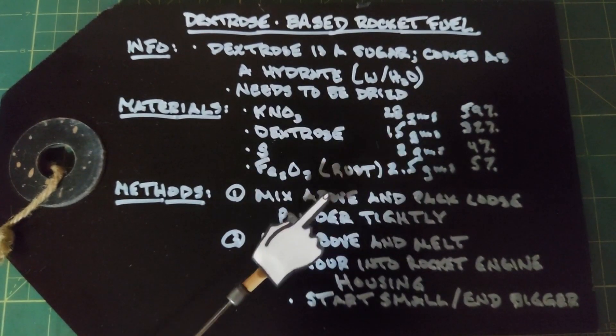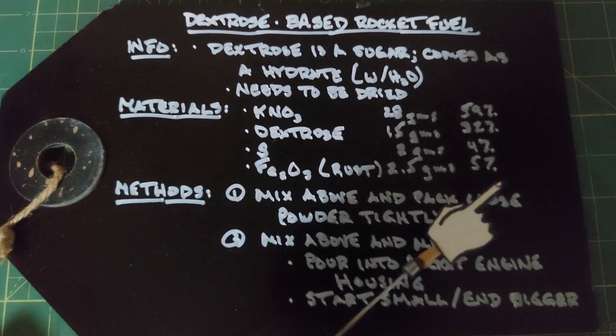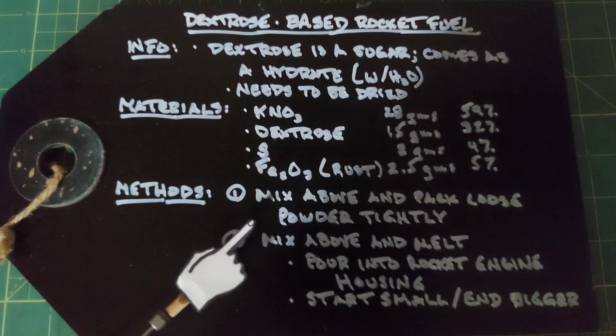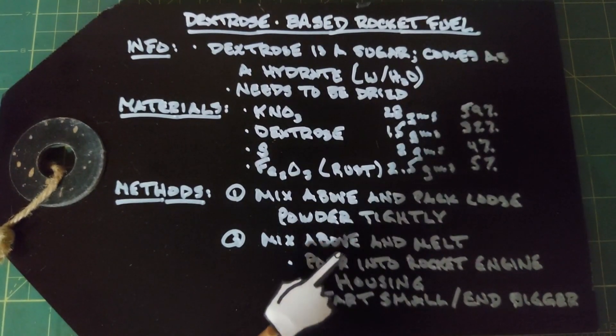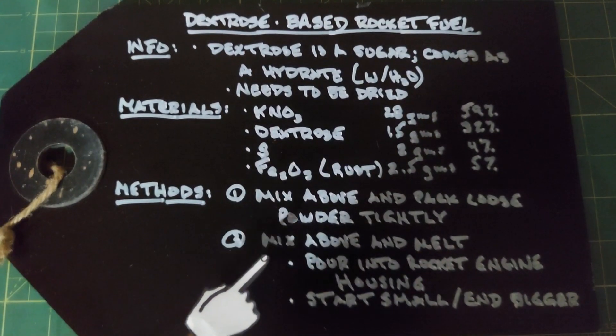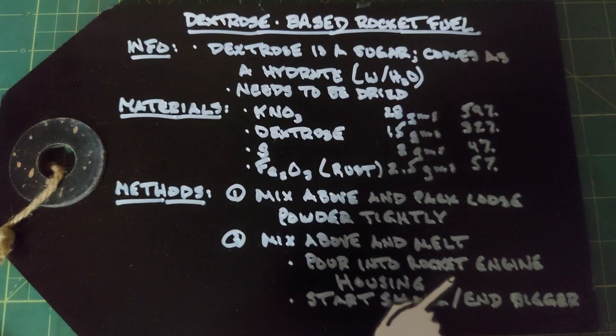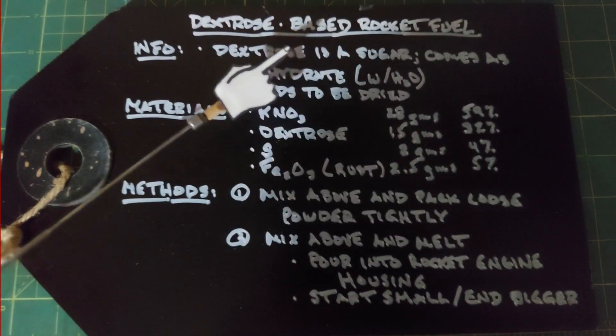The methods: the first one is just to mix the above powders and pack them tightly into the housing of the rocket engine and light it with a nozzle. The second one will be to mix the above again and melt it and then pour this into a rocket engine housing. We'll start small and test it out and I hope to end bigger.